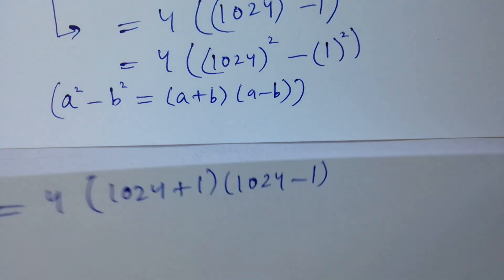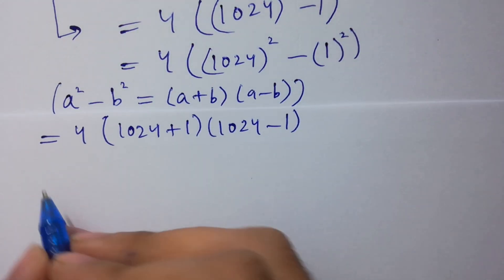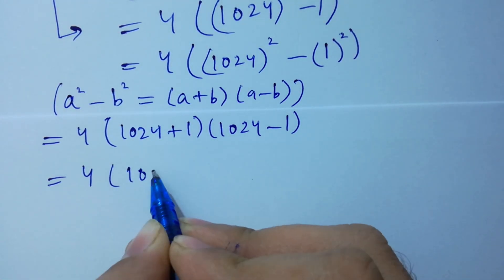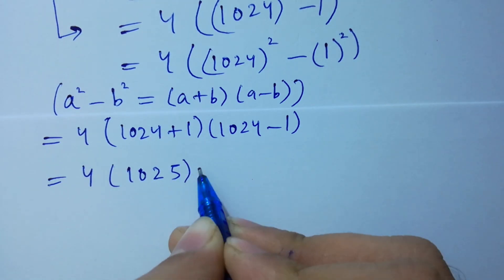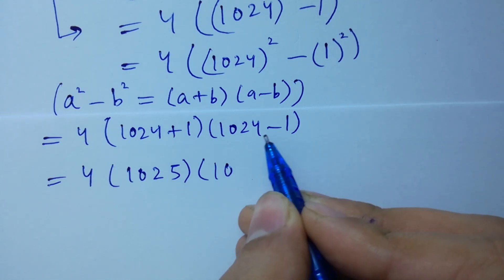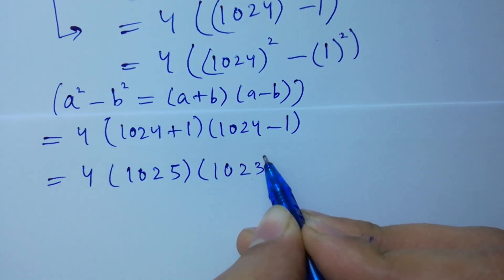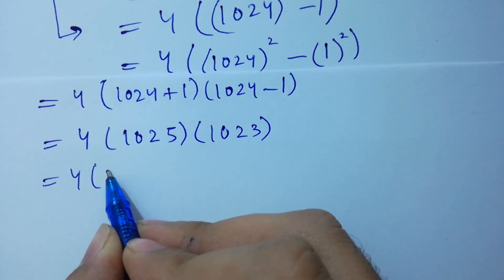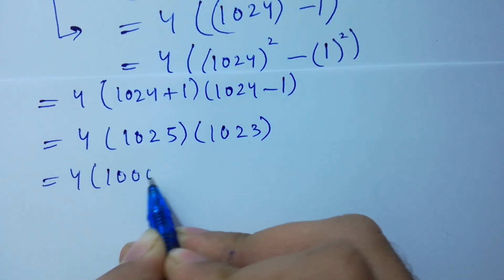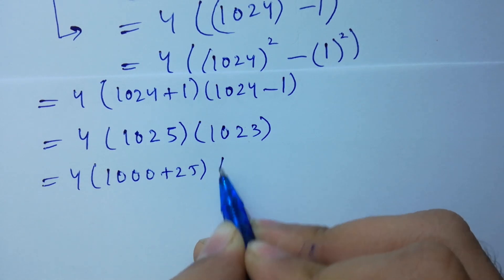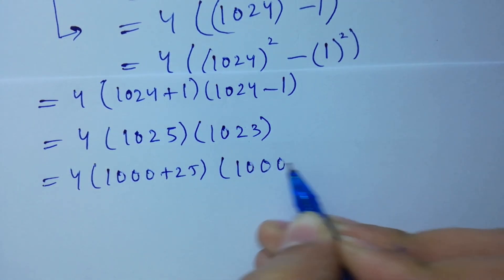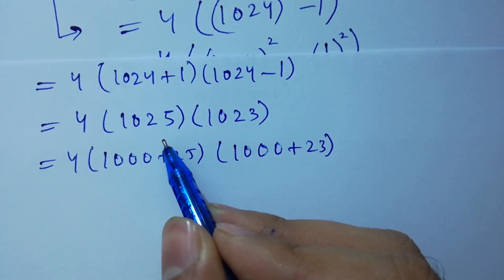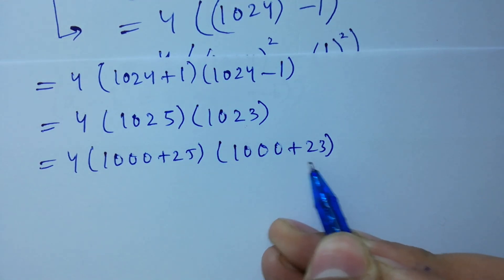Solving here: 1024 plus 1 will be 1025, and 1024 minus 1 will be 1023. This is the same as (1000 plus 25) times (1000 plus 23), because 1000 plus 25 is 1025 and 1000 plus 23 is 1023. Clear?